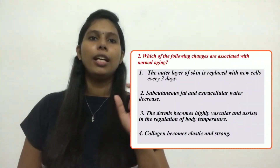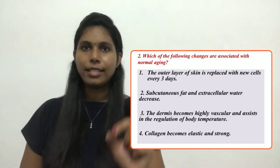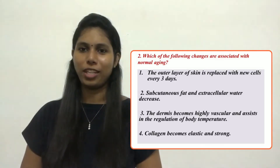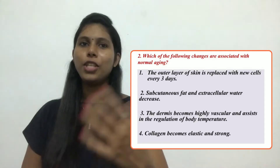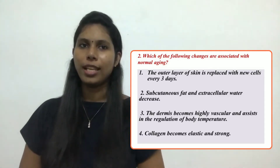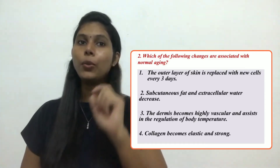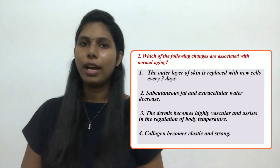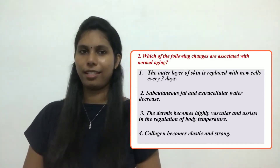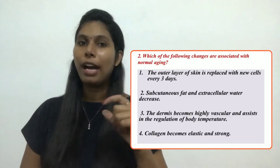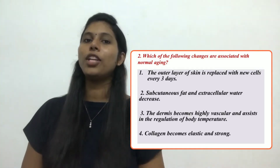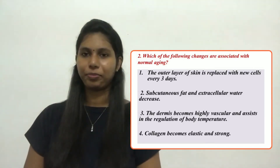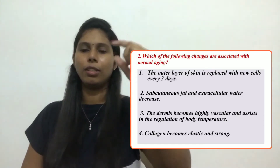Let's go to one more question. Which of the following changes are associated with normal aging? The options are: the outer layer of the skin is replaced with new cells every three days; subcutaneous fat and extracellular water decrease; the dermis becomes highly vascular and assists in regulation of body temperature; and collagen becomes elastic and strong.